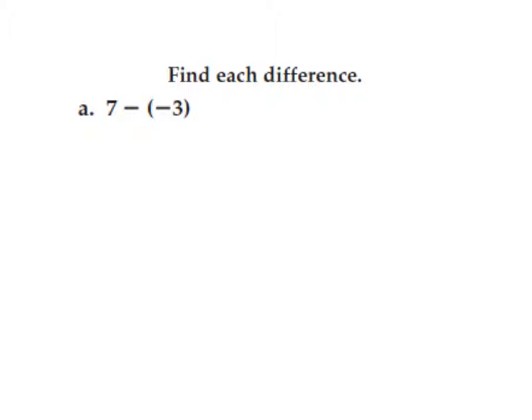Find each difference. Problem A: 7 minus negative 3. Using the additive inverse: 7 stays the same, subtraction turns to addition, and negative 3 turns into a positive 3. Since the signs are both the same, I'm going to add: 7 plus 3 is 10. The sign for 10 is positive because the largest absolute value is 7 and the sign is positive.